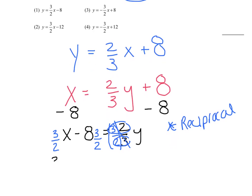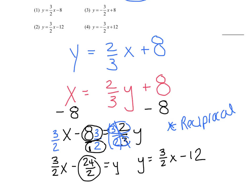This just remains 3 over 2x, then you have a minus sign. I'm going to put this 8 as a fraction over 1. When I multiply, I multiply the tops and the bottoms: 8 times 3 is 24, 2 times 1 is 2. So I get y equals 3 halves x minus 12. There's my inverse, so I'm going with choice 2.